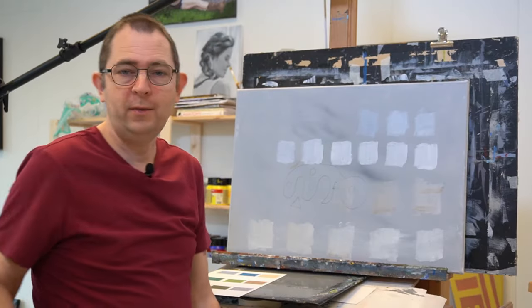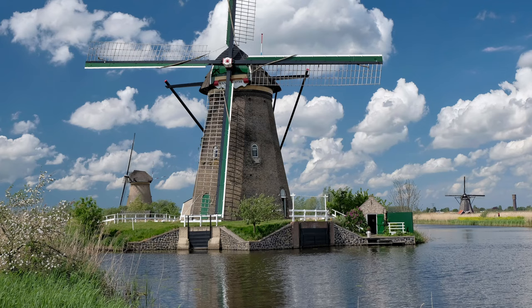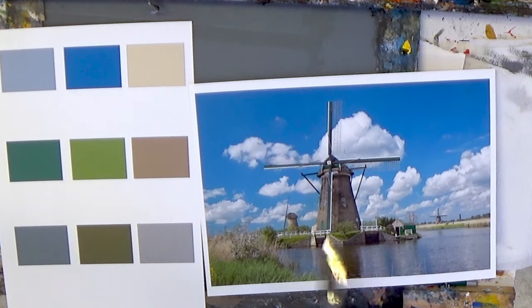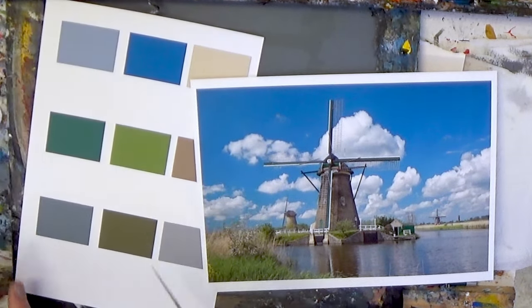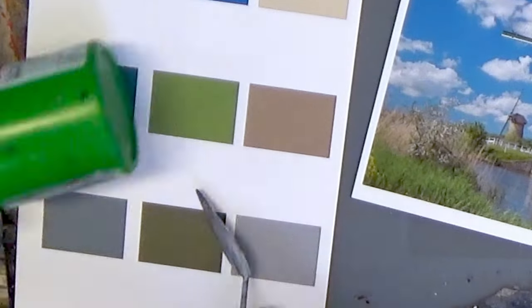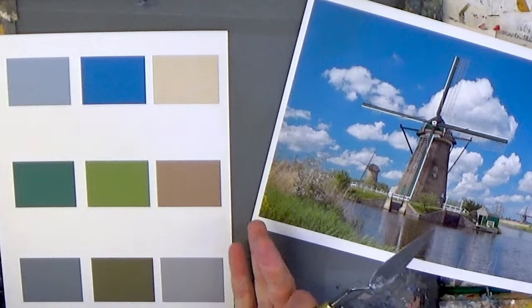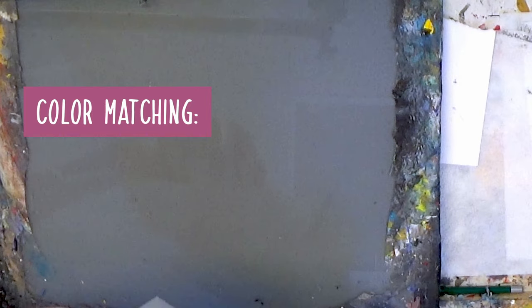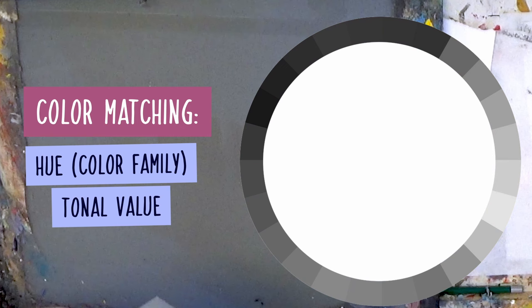I'm from the Netherlands, so let's take a cliché and take a windmill picture. I've taken some colors out of this picture — this blue is from the sky, this is from a cloud, this is a gray, this is green from the grass, this is a lighter green from the grass. If you see all these colors, they aren't that vivid. If I compare the green with a green that I buy in the shop, it's way too green. So these colors are from this picture and I'm going to try to match them. We look at three things when we want to match colors: the hue, the tonal value, and how vivid the color is — how saturated.